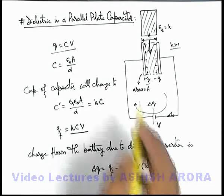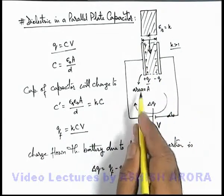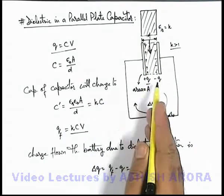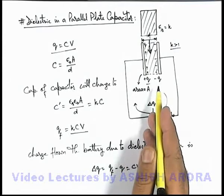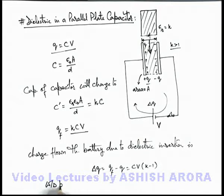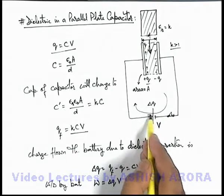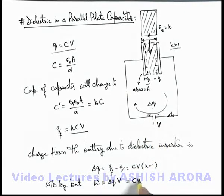That means on insertion of dielectric slab, battery will supply some excess charge to the plates to achieve a new steady state. In the process battery will also do some work, and we can calculate work done by battery in the process is W which is delta q multiplied by the battery potential difference. Because we know that work done by battery is charge supplied by battery multiplied by its potential difference, so this can be written as CV squared k minus 1.